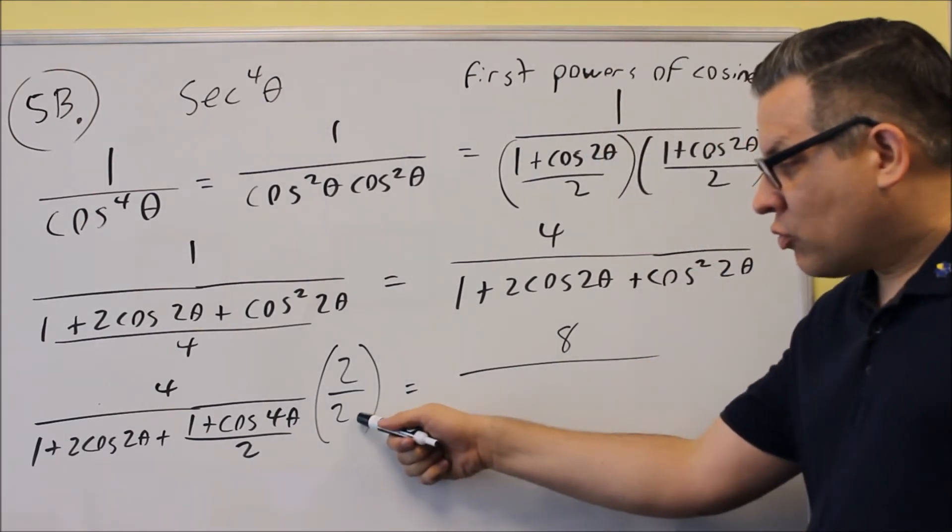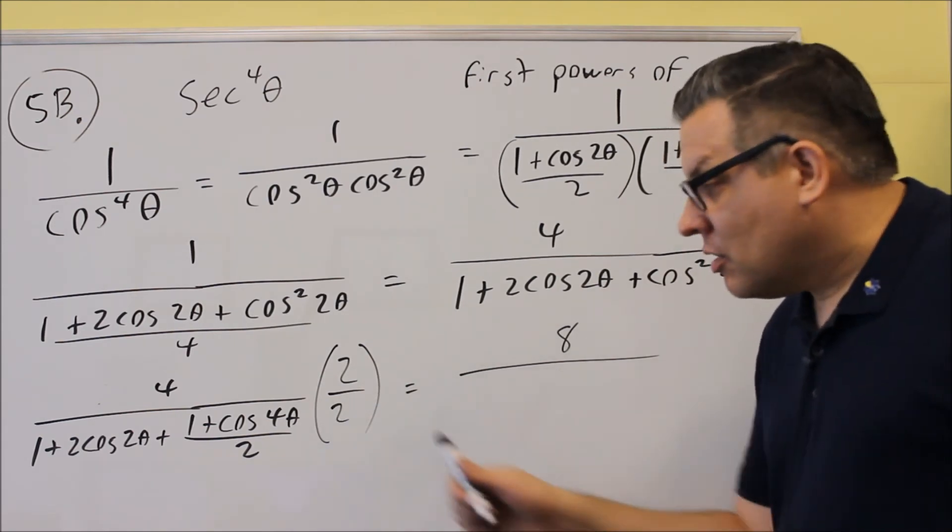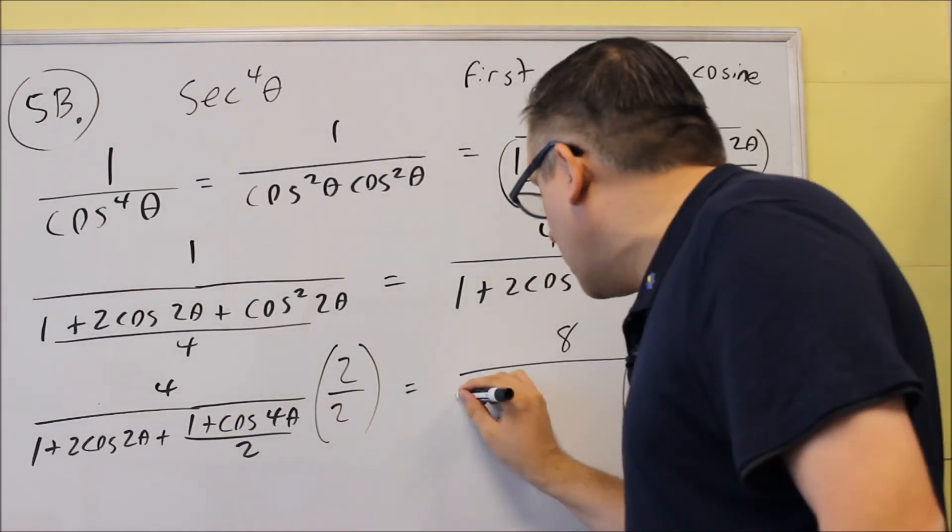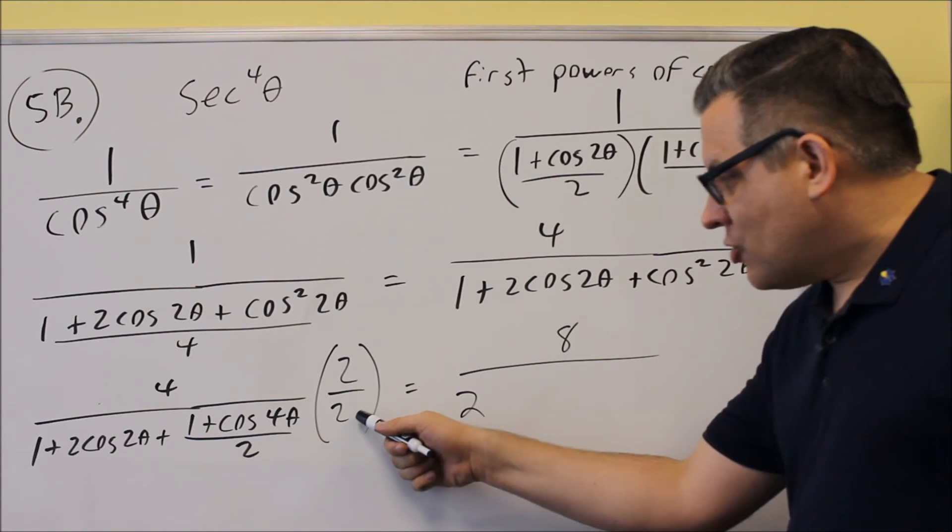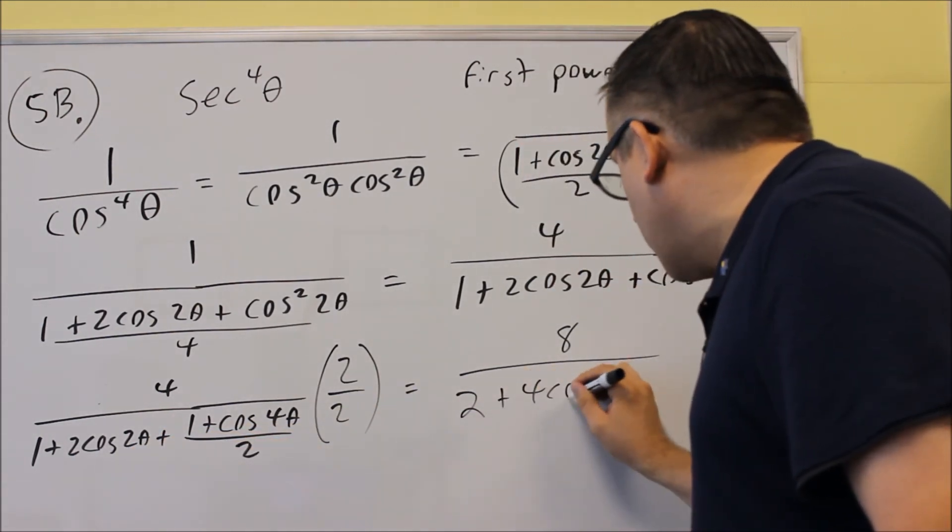But now when I do this one, the 2 across the bottom, every single thing inside here must be multiplied by 2. So 2 times the first one will get just 2 there. 2 times 2 cosine 2 theta will give you 4 cosine 2 theta.